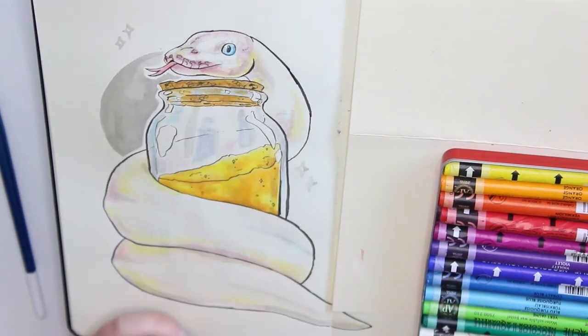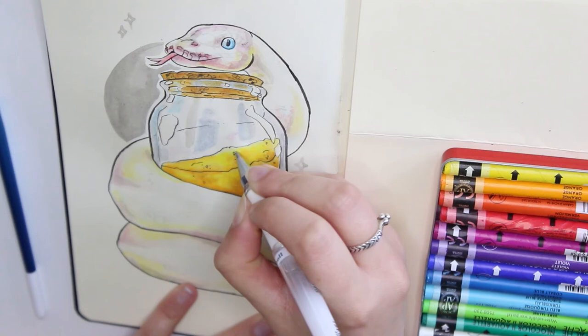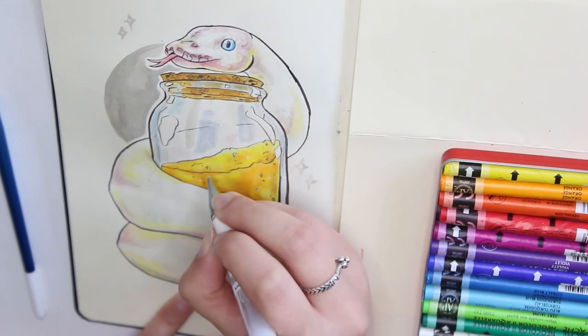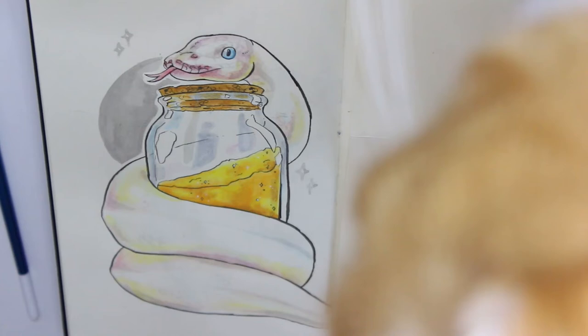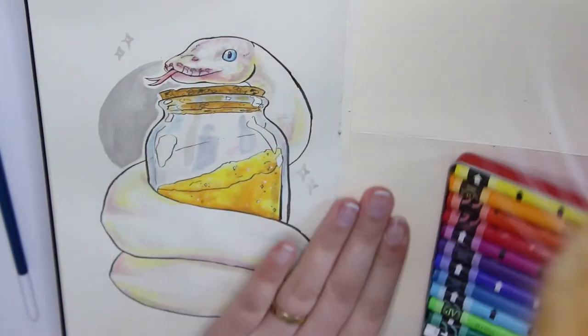But yes, that has been painting number three for Witchtober. Tomorrow we're starting a new week with a new theme and I am super excited. Will you be joining any of the prompts next week? The theme is Plants and their Uses. I have so many ideas for next week.